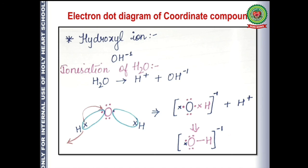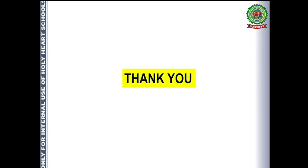You can see the structure showing how to draw the hydroxyl ion. So students, in today's lecture you have understood what coordinate bond is, how it is formed, and the various examples with the help of their electron dot diagrams. Thank you so much.